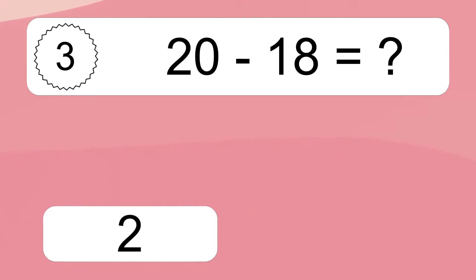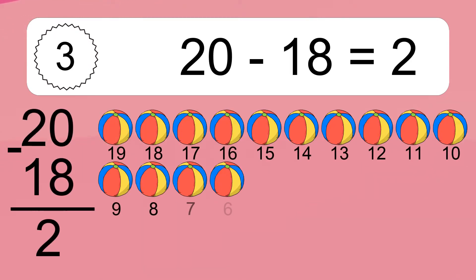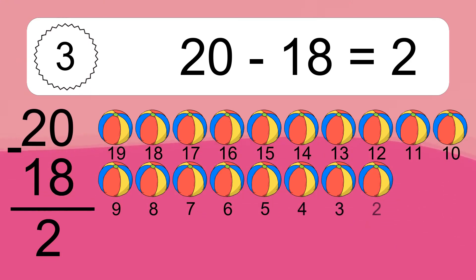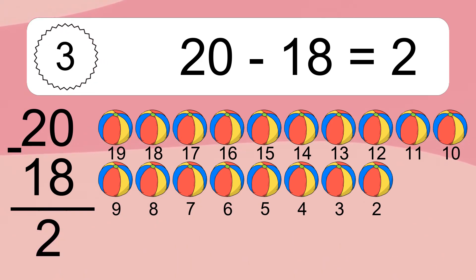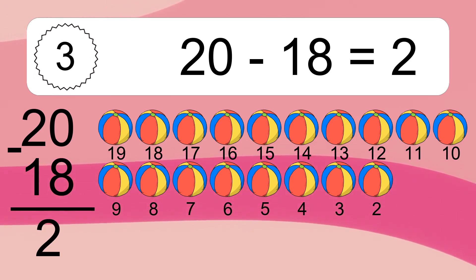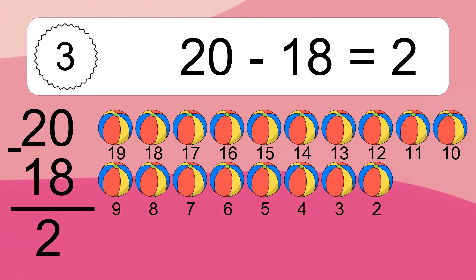20 minus 18 equals what? 20 minus 18 equals 2. Let's count it: 19, 18, 17, 16, 15, 14, 13, 12, 11, 10, 9, 8, 7, 6, 5, 4, 3, 2.